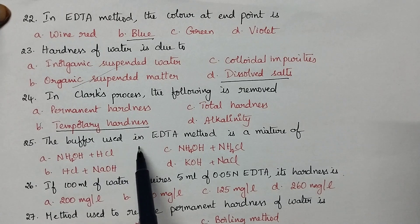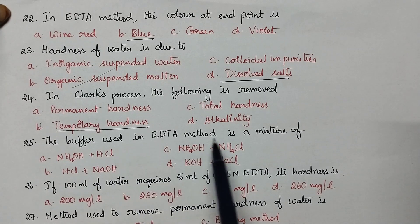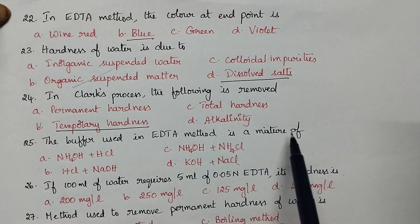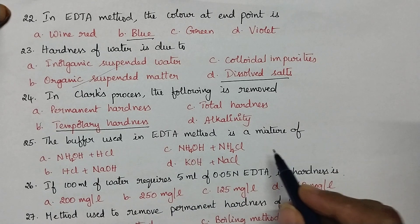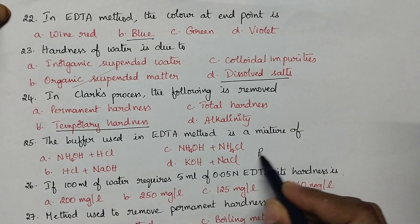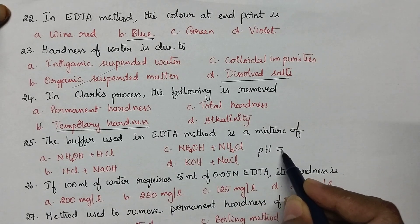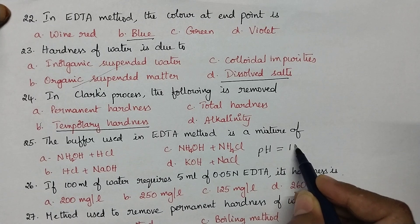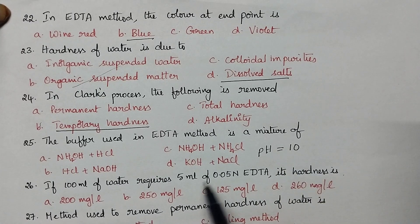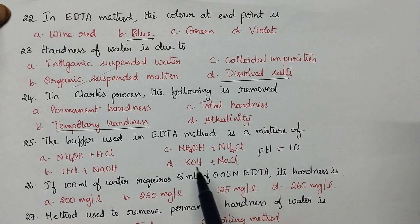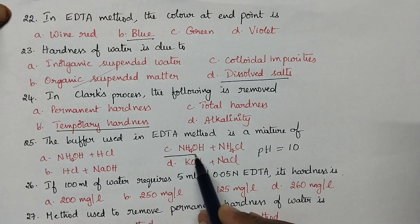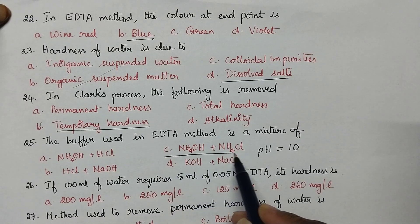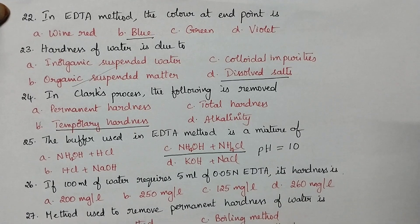The buffer used in the EDTA method is a mixture of ammonium hydroxide and ammonium chloride. The EDTA method is effective when pH is maintained at 10, so an ammoniacal buffer is preferred.